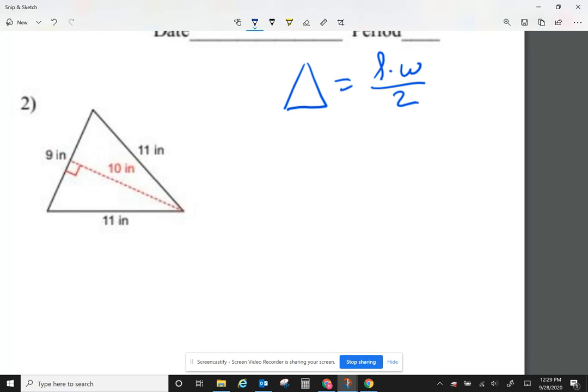So length times width, remember the length and the width, they intersect at 90 degrees. So they make that little 90-degree box. So I see my 90-degree box is right there. That box sometimes will be inside of the triangle. Sometimes it will be outside of the triangle. And I can tell it is made by 9 and 10.